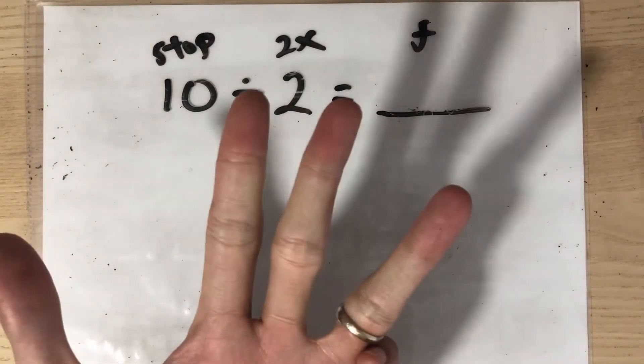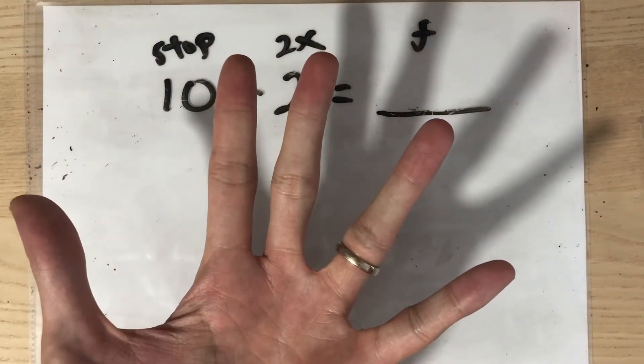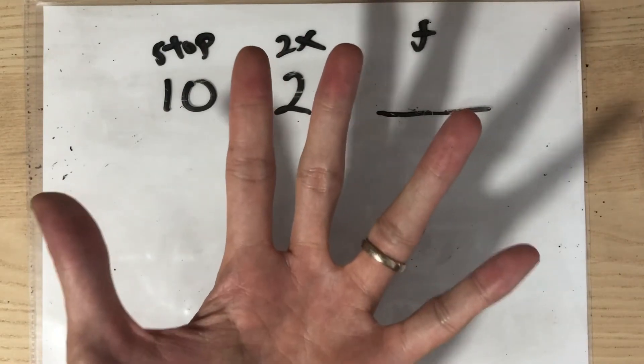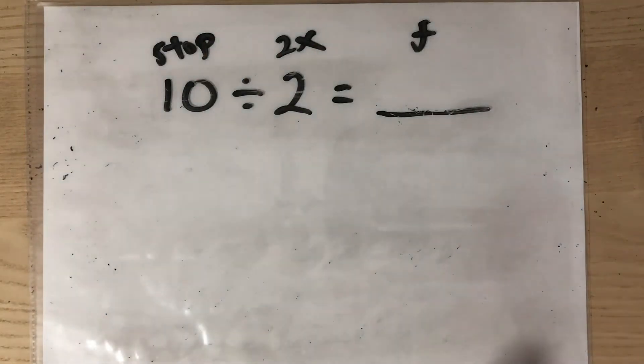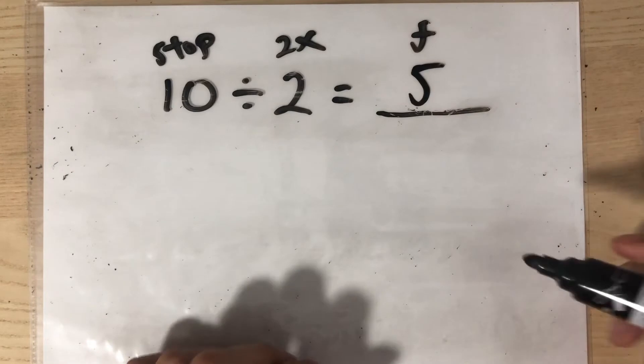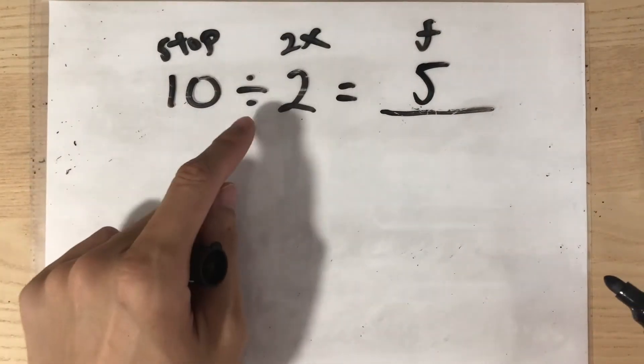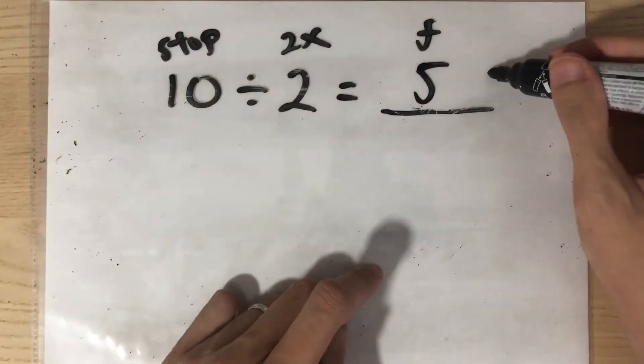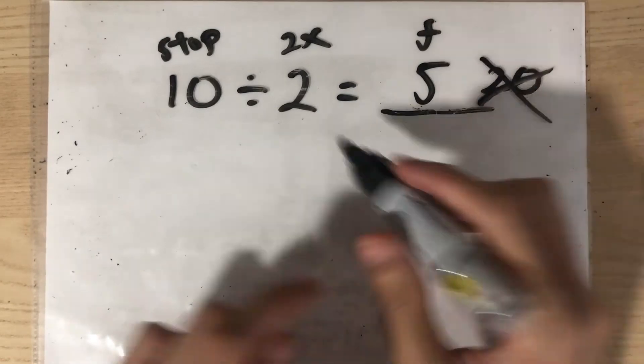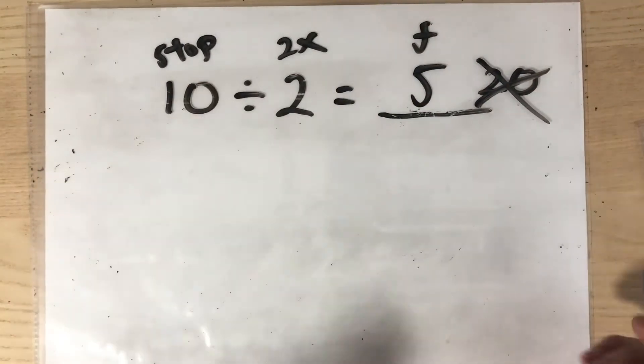2, 4, 6, 8, 10. The answer is the number of fingers I am holding up. How many fingers am I holding up? That's 5. So the answer is 5. Be careful not to take 10 multiplied by 2 which will give you an answer of 20. That is wrong because we are doing divide not multiply.